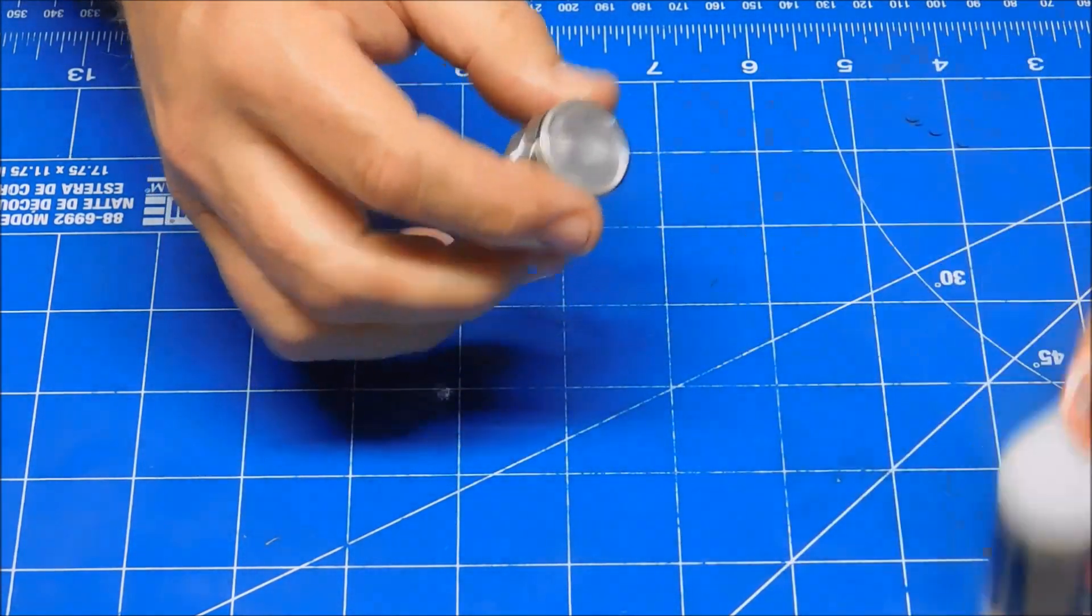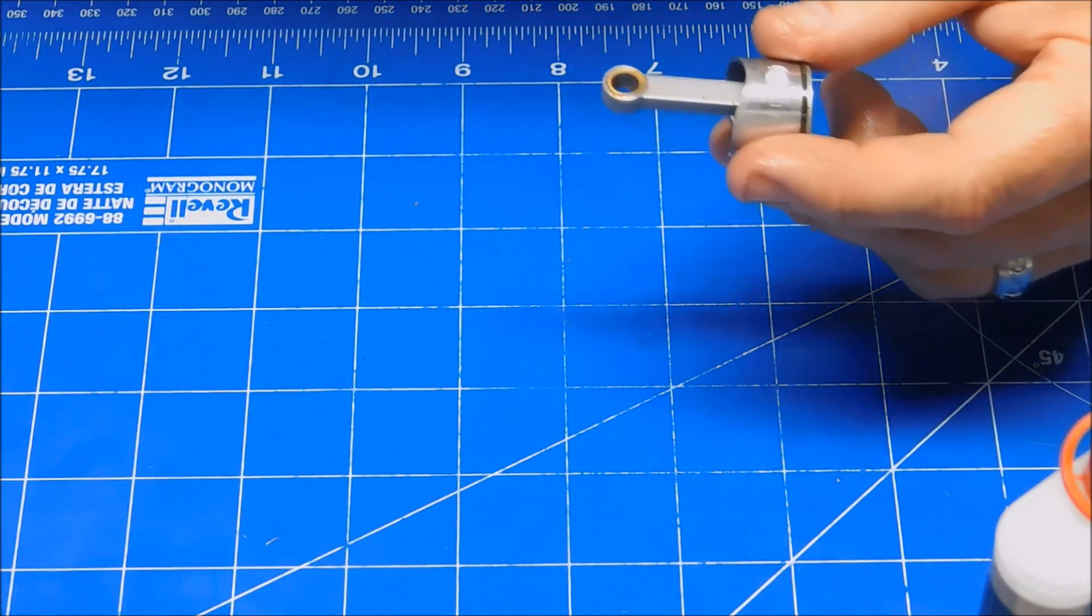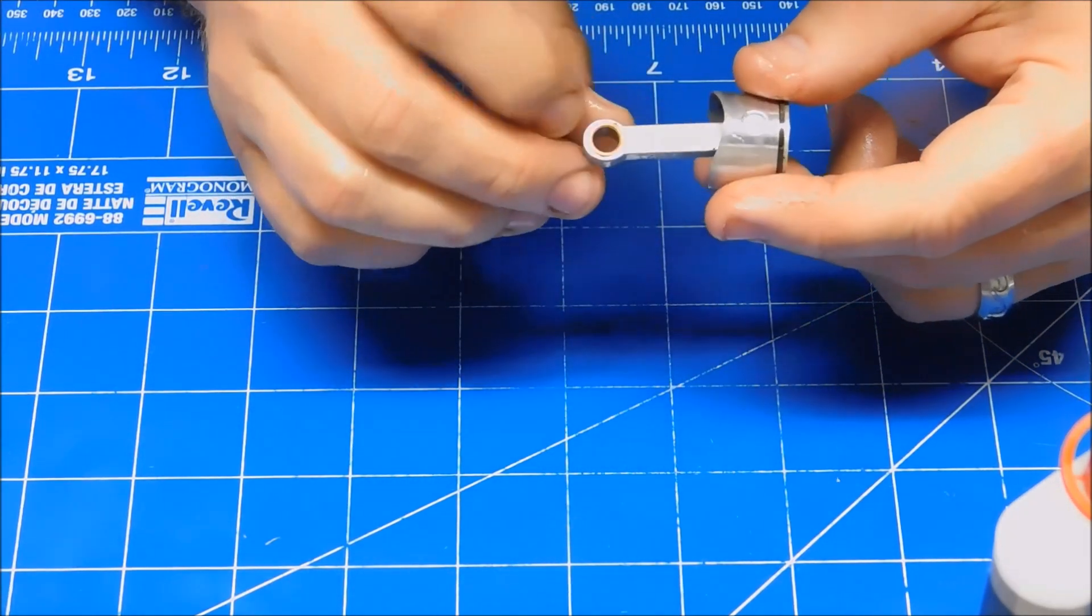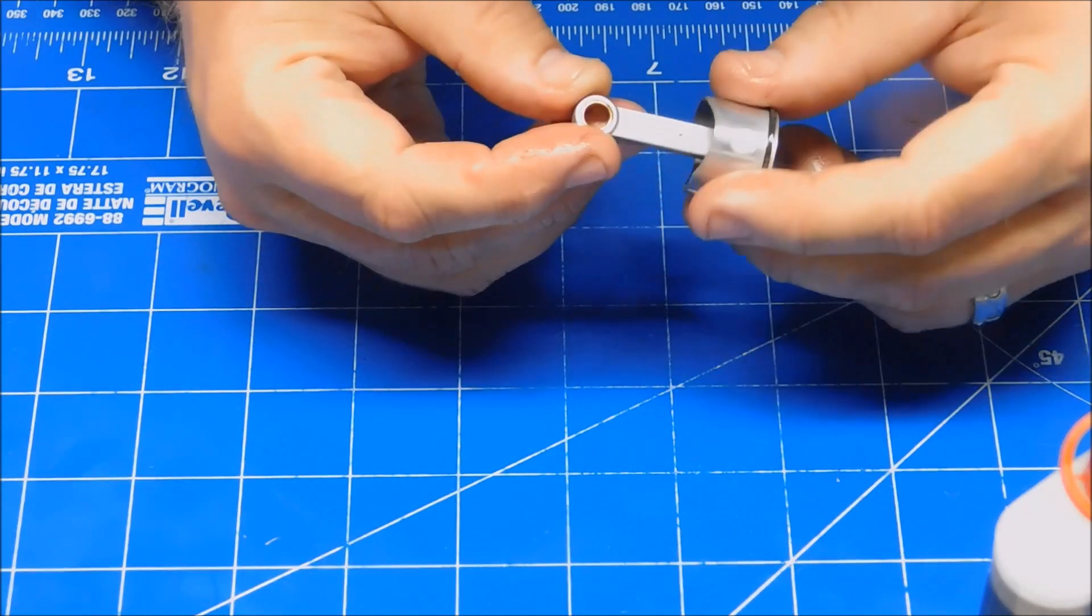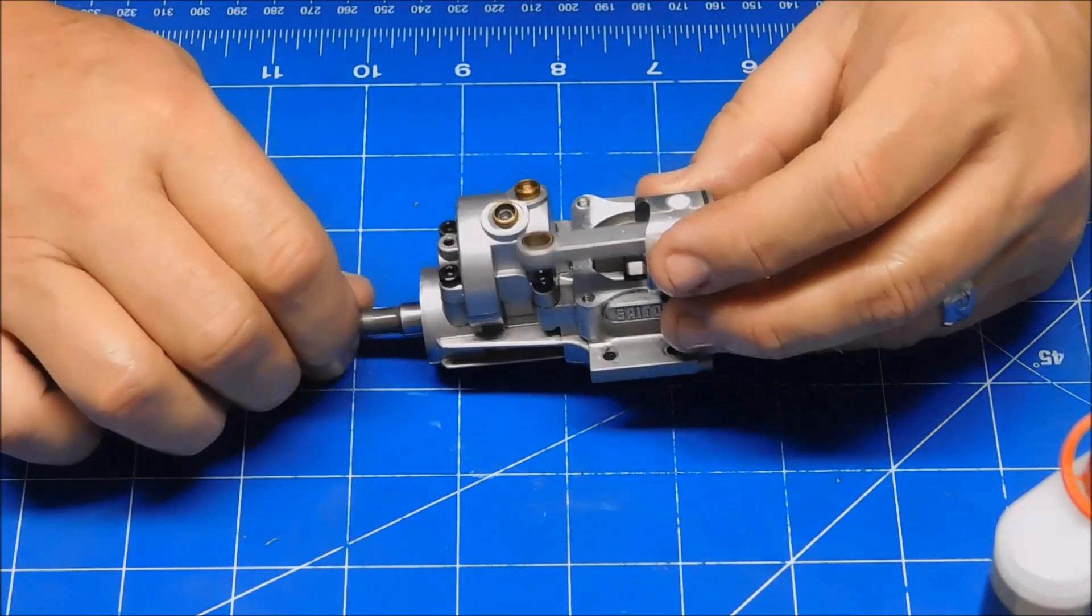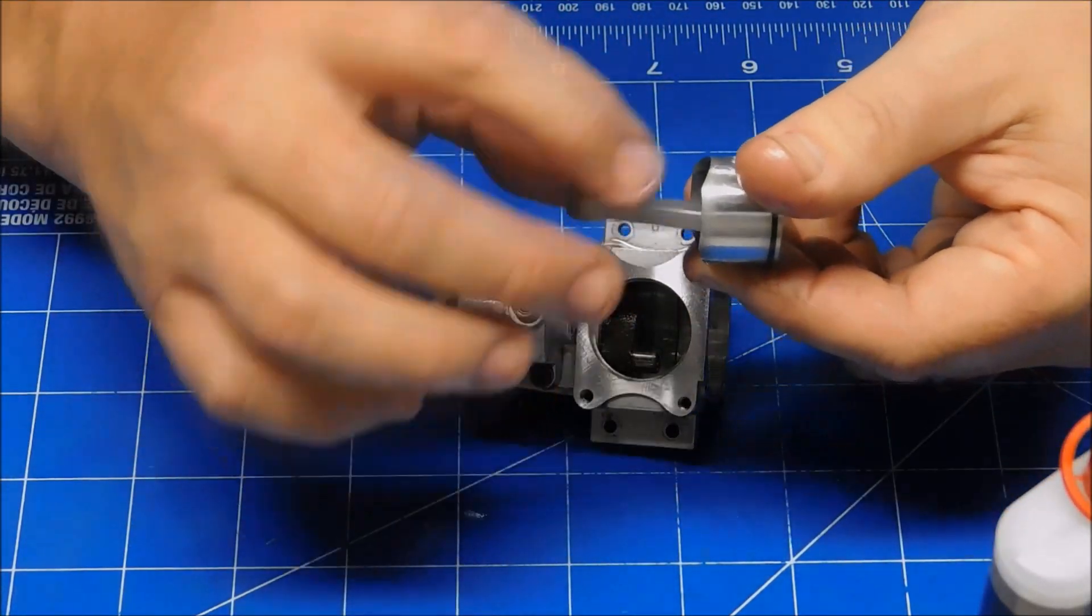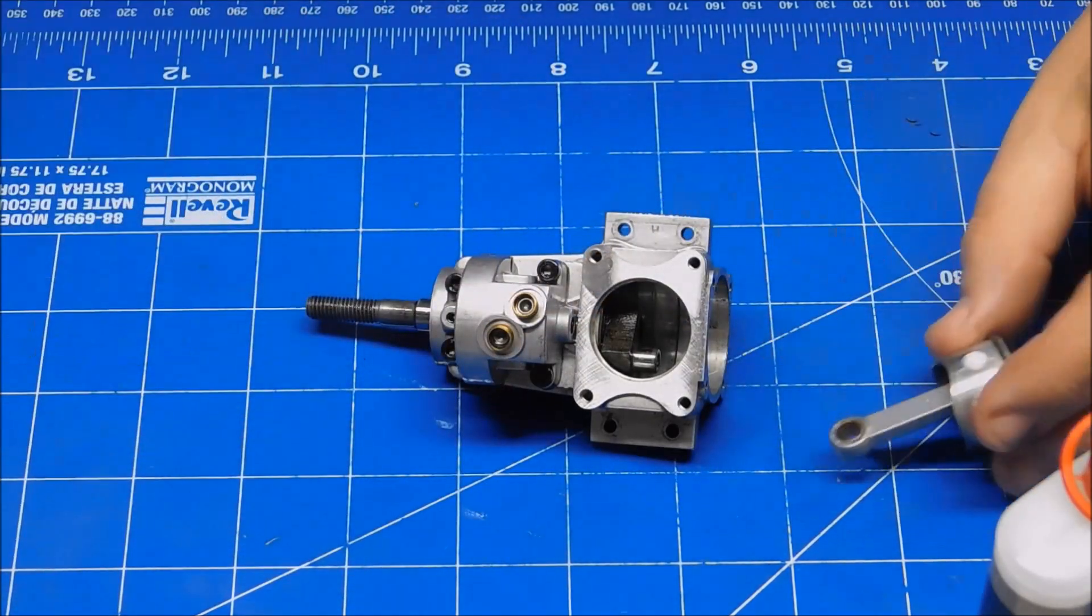So I'm going to oil this piston up, get it all nice and lubed up. We'll look to see which side of this is chamfered to accept the connecting rod. So this side will face forward and it also has a dot here, denoting that's the forward position.